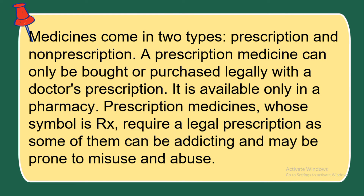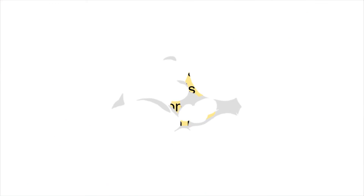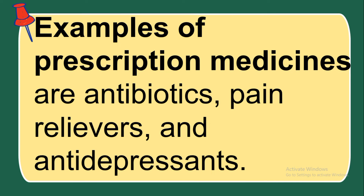Medicines come in two types: prescription and non-prescription. A prescription medicine can only be bought or purchased legally with a doctor's prescription and is available only in a pharmacy. Prescription medicines, whose symbol is RX, require a legal prescription as some of them can be addicting and may be prone to misuse and abuse. Examples of prescription medicines are antibiotics, pain relievers, and antidepressants.